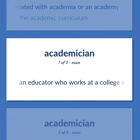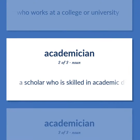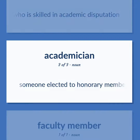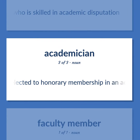Academic: an educator who works at a college or university. Academician: a scholar who is skilled in academic disputation. Also: someone elected to honorary membership in an academy.